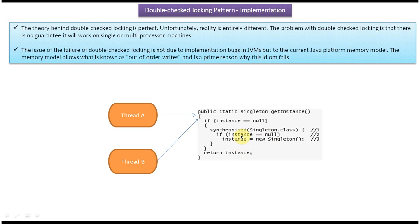Once thread A comes out of the synchronized block, thread B will enter and execute from the line where it was waiting. Thread B will check if instance equals null — no, instance is not equal to null, because thread A has already created the instance. So thread B will not enter the creation block. Thread B will return the instance which was already created by thread A. In this manner, only one instance will be created.